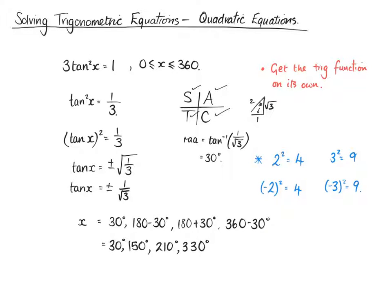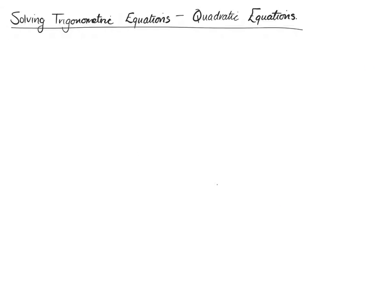So for these functions where you've got the squared tan x just on its own, you are going to get four answers because it's going to mean every quadrant, because it's plus or minus. So we're going to go on to the next type of quadratic equation that we can get, which is going to look a little bit more like the quadratic functions that we've been factorizing an awful lot at national 5 and higher.